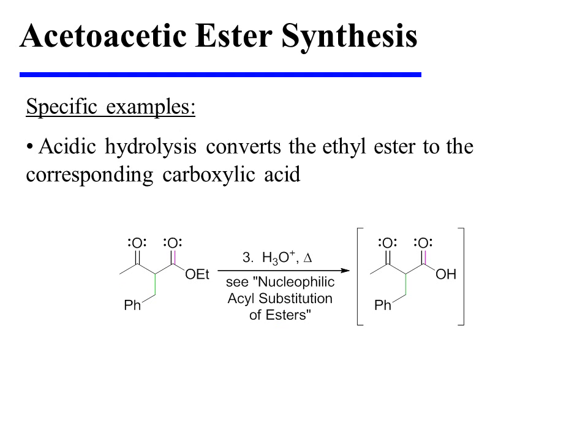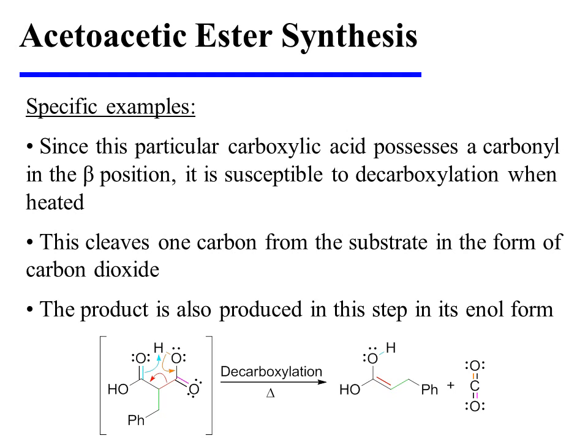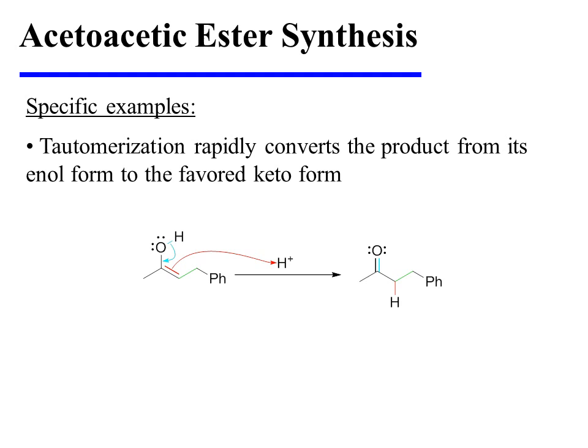Acidic hydrolysis then converts the ethyl ester to the corresponding carboxylic acid. Since this particular carboxylic acid possesses a carbonyl in the beta position, it is susceptible to decarboxylation when heated, cleaving one carbon from the substrate in the form of carbon dioxide. The product is also produced in this step in its enol form, and tautomerization rapidly converts it to the favored keto form.